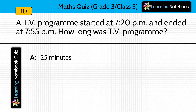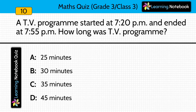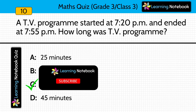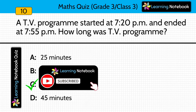A TV program started at 7:20 pm and ended at 7:55 pm. How long was the TV program? Calculate the time from 7:20 pm to 7:55 pm — you will get the answer as 35 minutes.